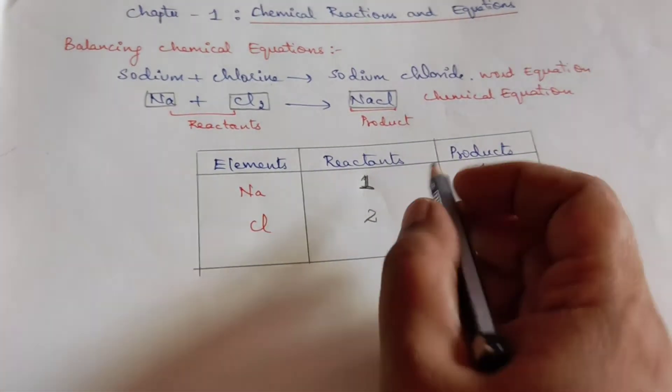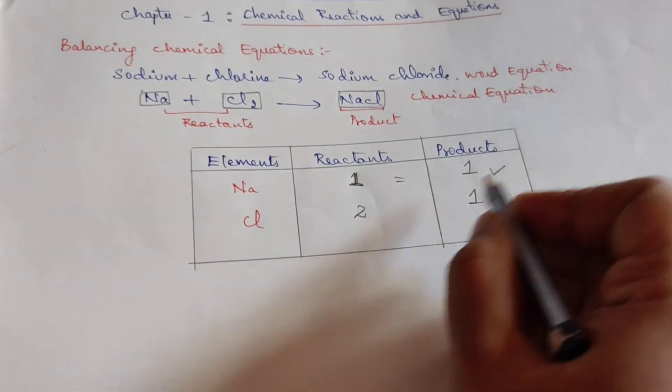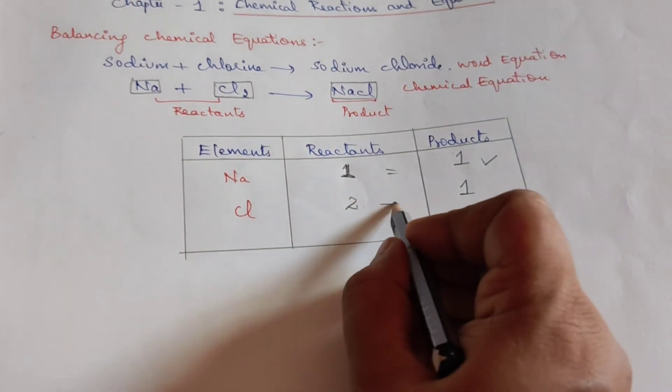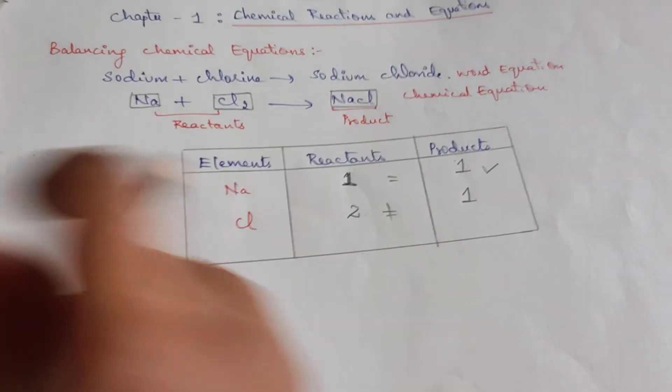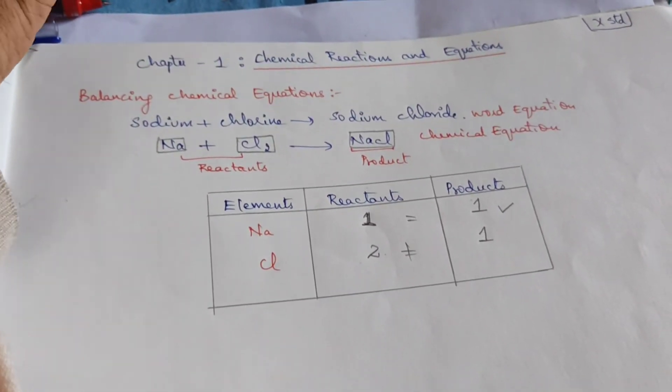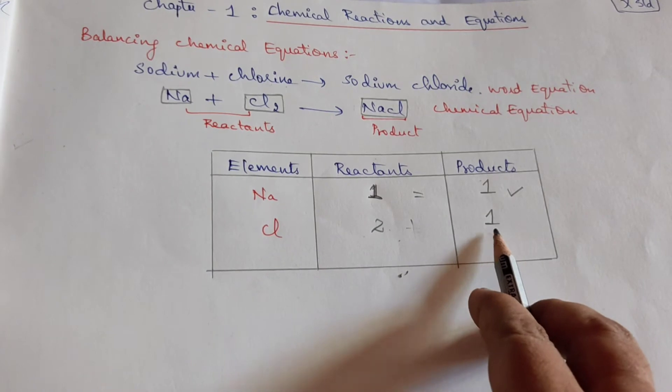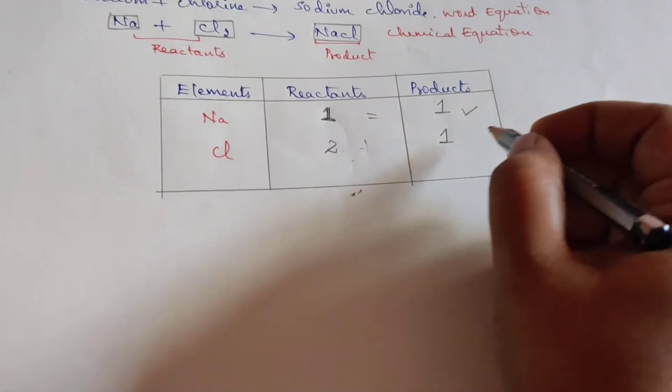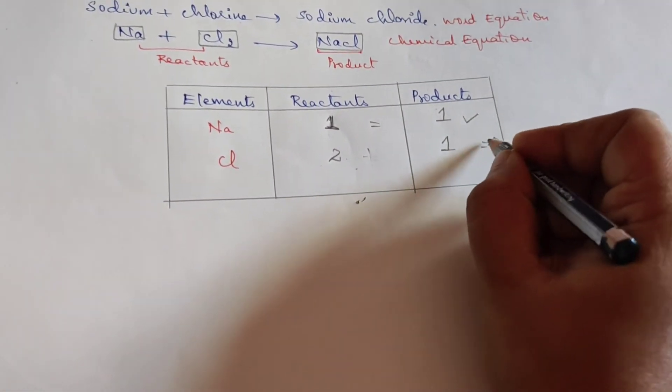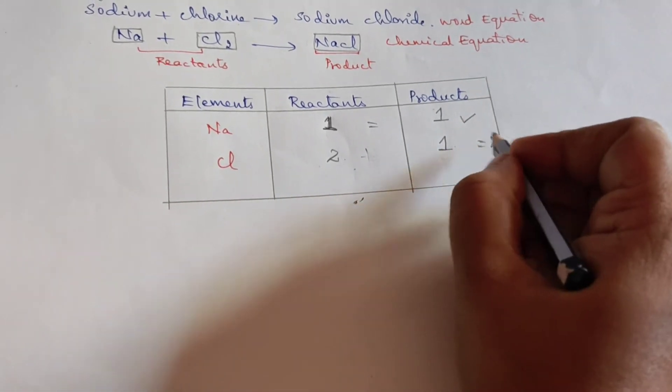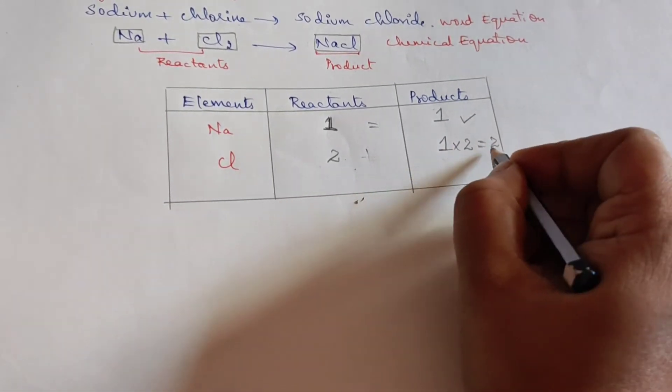1 is equal to 1, this is balanced. Is 2 equal to 1? No. Hence we need to balance. How do we balance it? In order to balance it, first we take the smaller number in this balance line, 1. How do we make 1 as 2? 1 how many times is 2? We know 1, 2 times is 2.